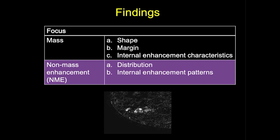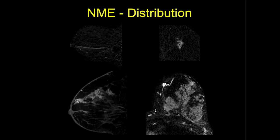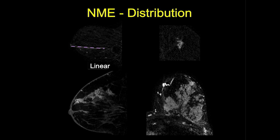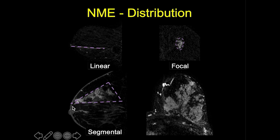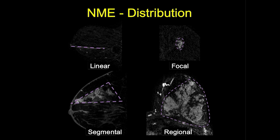Non-mass enhancement is a unique area of enhancement that is not a focus or mass, and is discrete from normal background parenchymal enhancement. It is described by distribution and internal enhancement patterns. Distribution types include linear — straight or curved, which may branch; focal — a small confined area generally less than 25% of a quadrant; segmental — a triangular cone with apex pointing toward the nipple; and regional — a large geographic area not conforming to a ductal distribution, generally more than two quadrants.